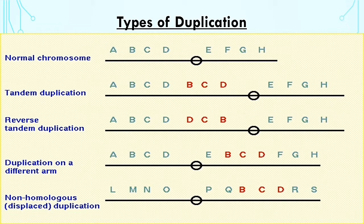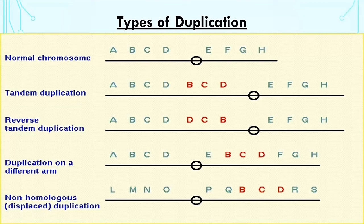In tandem duplication, a gene is copied adjacent to itself. In reverse tandem duplication, the gene is arranged in the opposite order of the original sequence — for example, if the original sequence is BCD, in reverse tandem duplication there will be a DCB sequence placed adjacent to the original.